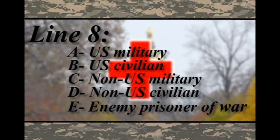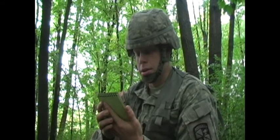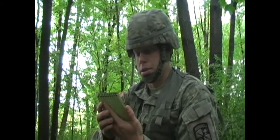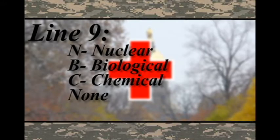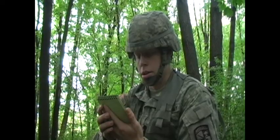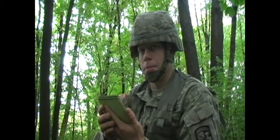Line 8 is patient nationality and status. Alpha — U.S. military. Bravo — U.S. civilian. Charlie — Non-U.S. military. Delta — Non-U.S. civilian. Echo — EPW. Example: Lima 8, Alpha. Line 9 is nuclear, biological, or chemical conditions. November — Nuclear. Bravo — Biological. Charlie — Chemical. Or none. Example: Lima 9, None.